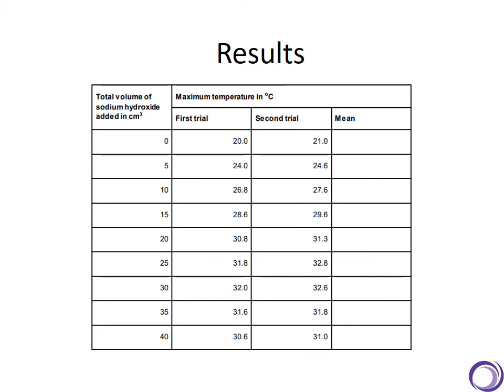If we've repeated the results, then we would always take a mean. We calculate this exactly the same way as you do in maths: so we would add up the first trial to the second trial and then divide it by two.